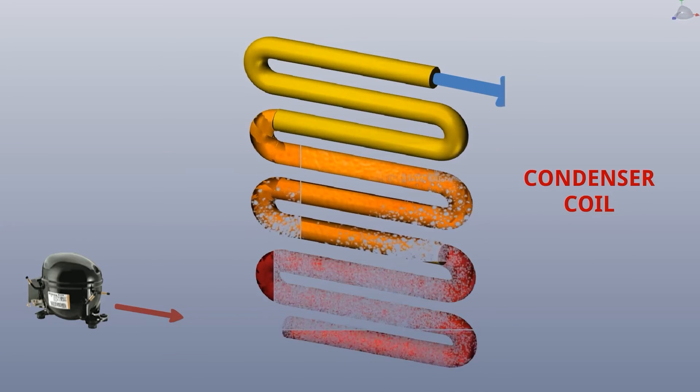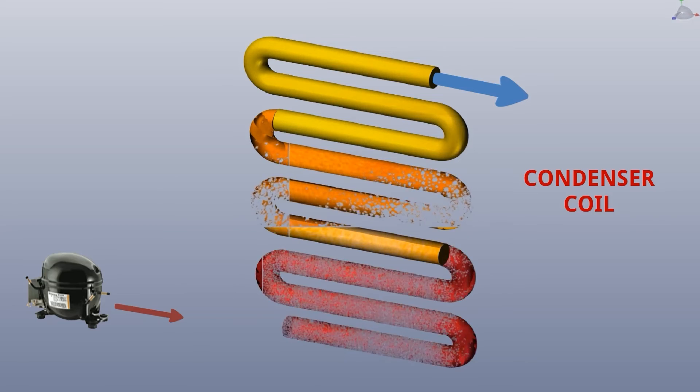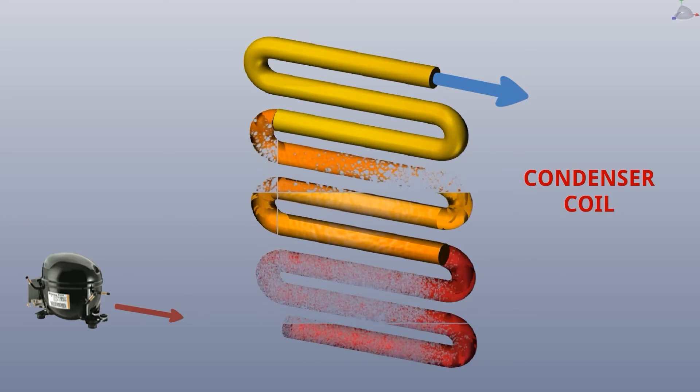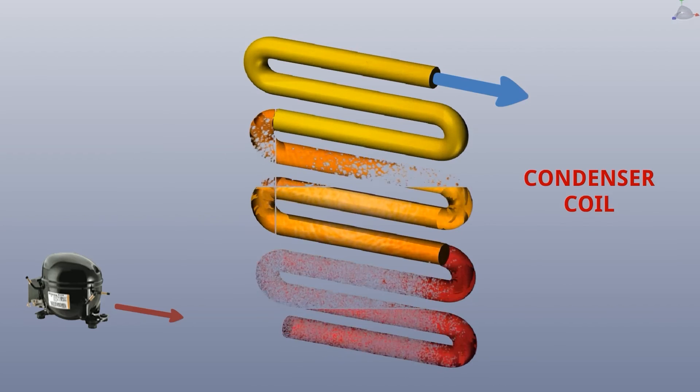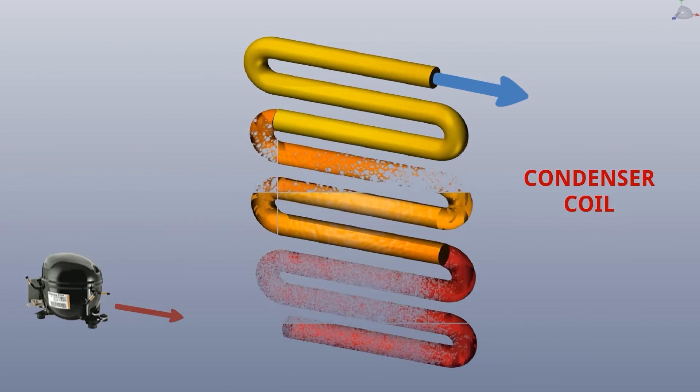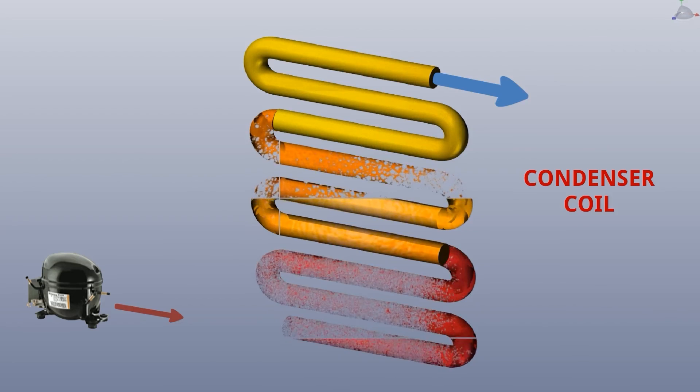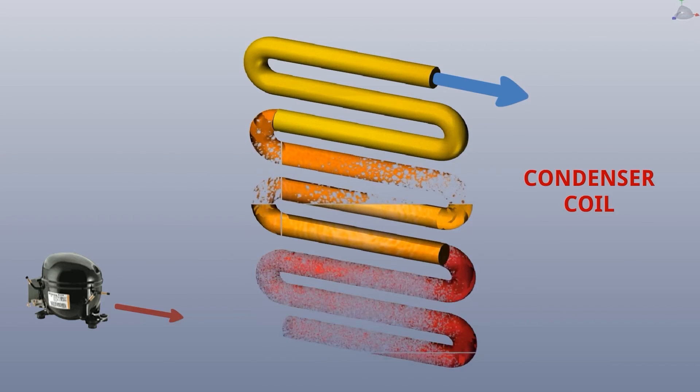High pressure refrigerant liquid comes out from this condenser coil. When refrigerant vapor changes into liquid, its volume will be a little bit less and the process of condensation will be faster.